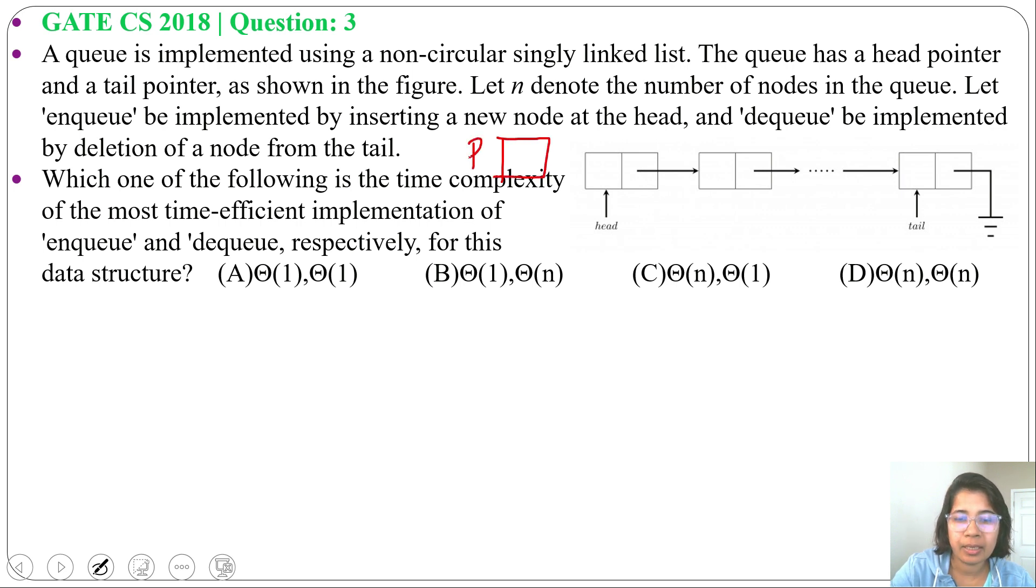Let it be P. Now we will add a pointer from P to head and head will point to P. Just by changing two pointers we can do the enqueue. So in enqueue, first P data will be data, then P next equals to head. So we add this pointer P next equals to head, then head equals to P. So head is pointing to P. Running time will be theta of 1 as we just updated two pointers.